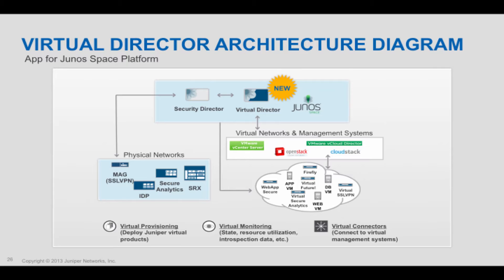Here's an architecture diagram that shows Virtual Director and the other elements in the Juniper portfolio. At the very top of the diagram, you'll see a JunoSpace box. JunoSpace is the management application for several different apps from Juniper. There's an app for managing your switching infrastructure, and there's an app called Security Director for managing firewall policies, VPN policies, IDS settings, and the element management of a firewall.